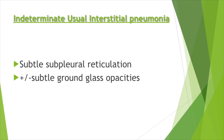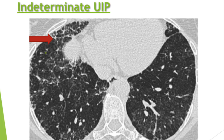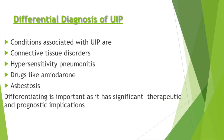Typical and probable UIP patterns allow confident identification of IPF. However, there is another pattern called indeterminate UIP, where we get only subtle subpleural reticulation with or without ground glass opacities, and we cannot say for sure this is usual interstitial pneumonia. This is where the radiologist and clinician get together and decide that a pathologist biopsy is required for a diagnosis.